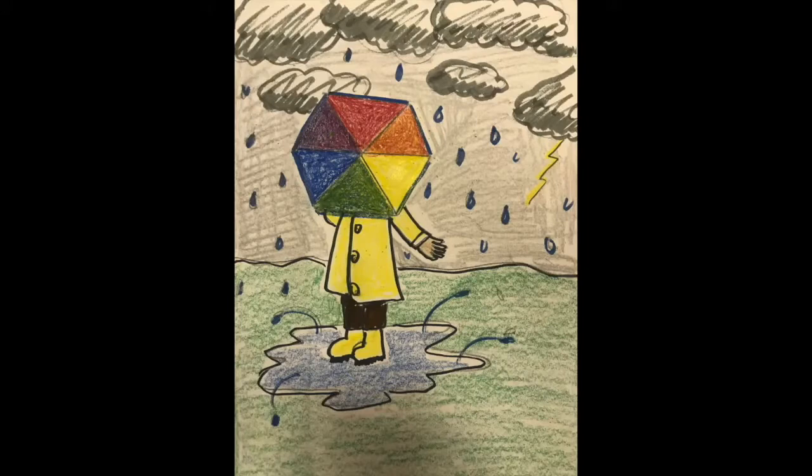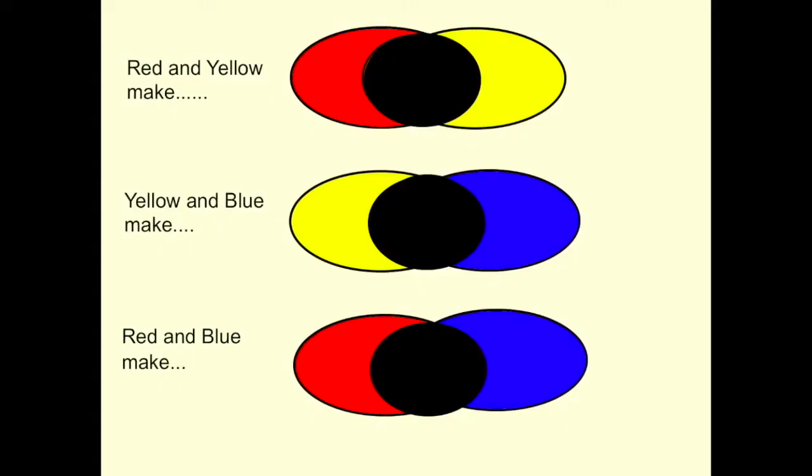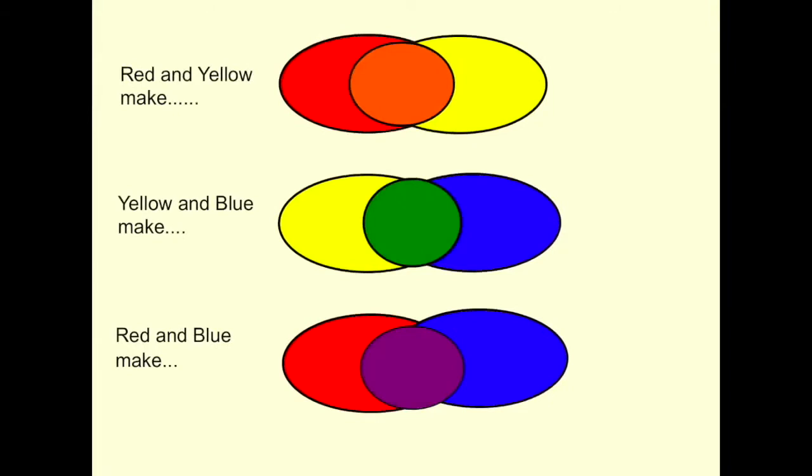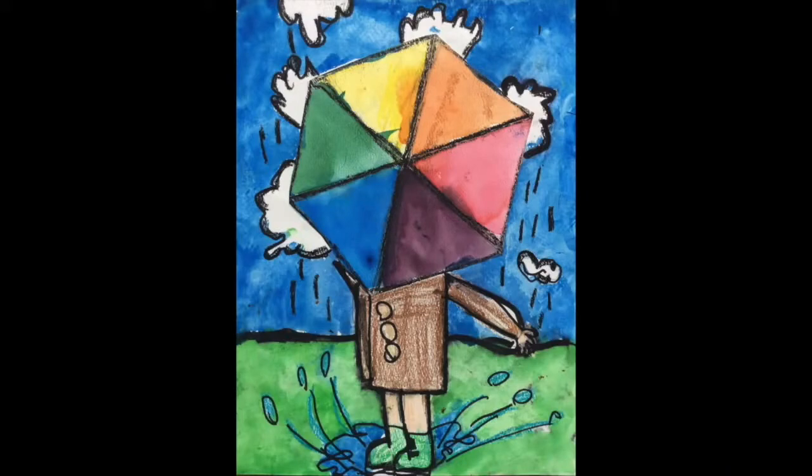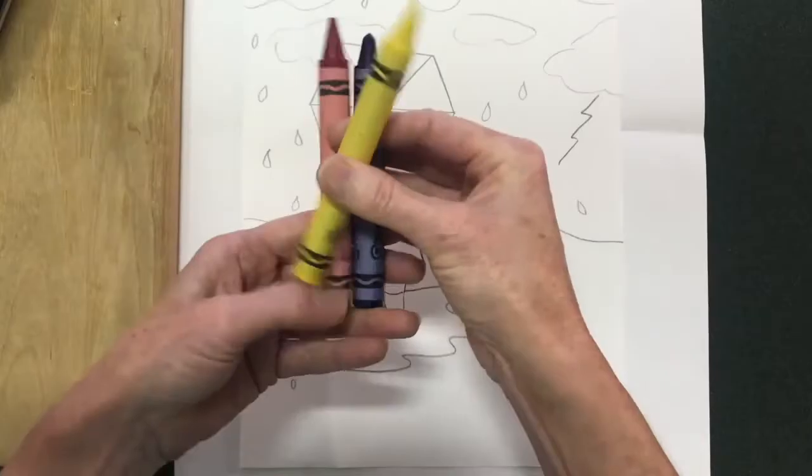Look at this umbrella that was made entirely using the primary colors red, yellow, and blue, even though you do see orange, green, and purple. Let's see what you already know: red and yellow make what new color? Yellow and blue make what new color? Red and blue make what new color? If you said red and yellow make orange, you would be correct. Yellow and blue make green. Red and blue make violet or purple.